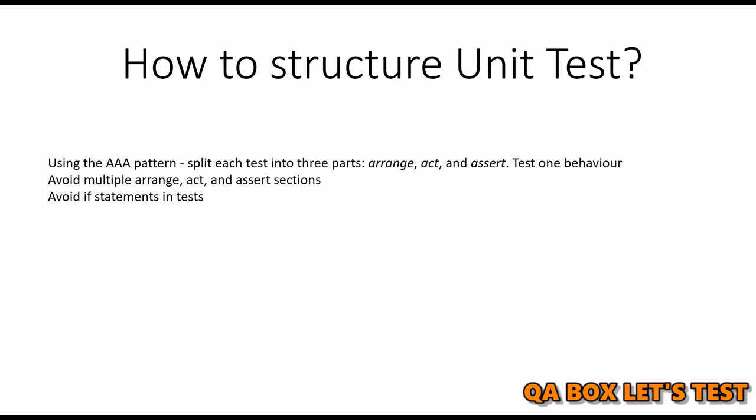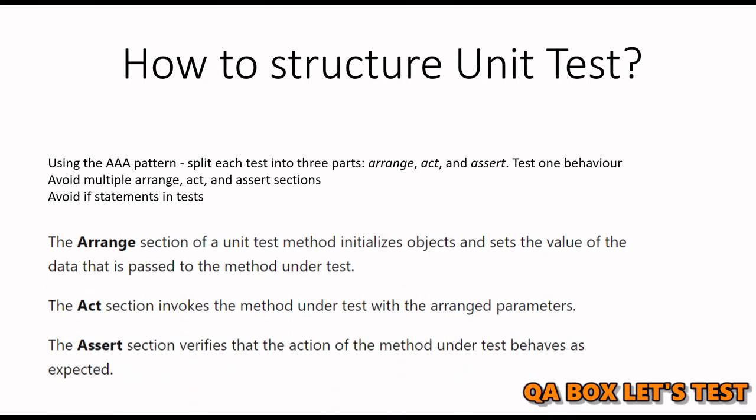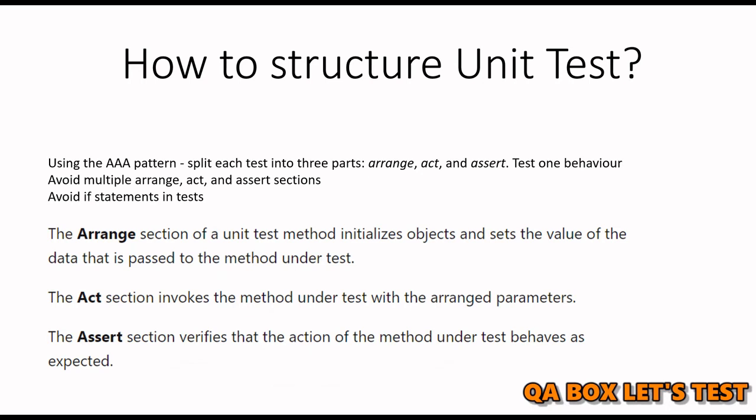The Arrange section of a unit test initializes objects and sets the value of data to be passed to the method under test — it is a precondition, the state we want to achieve. The Act section invokes the method under test with the arranged parameters. The Assert section verifies that the action of the method under test behaves as expected.